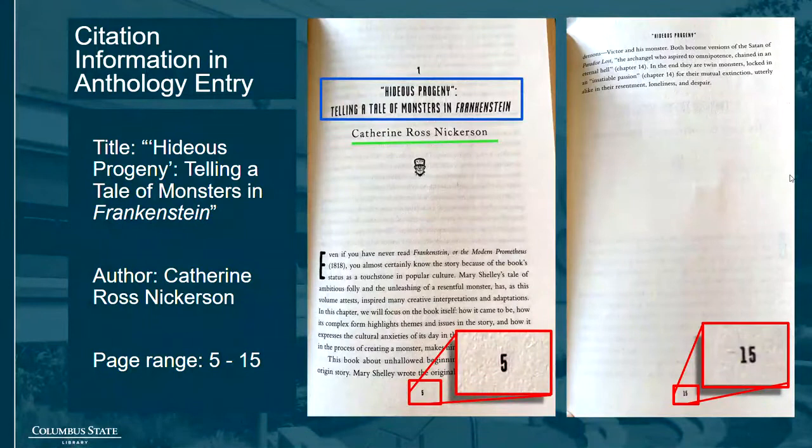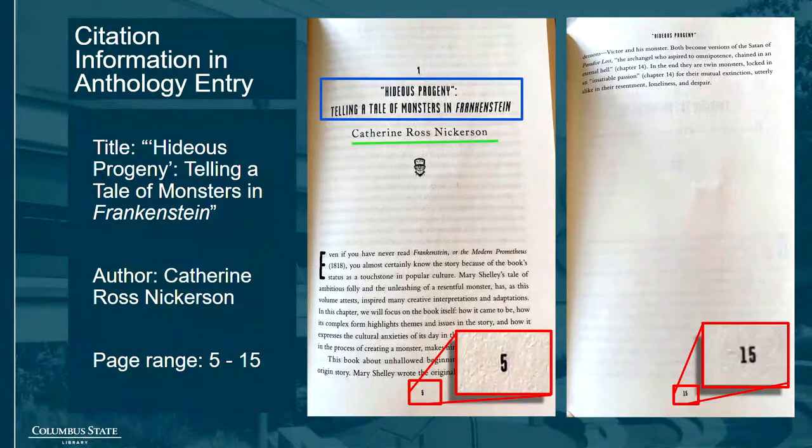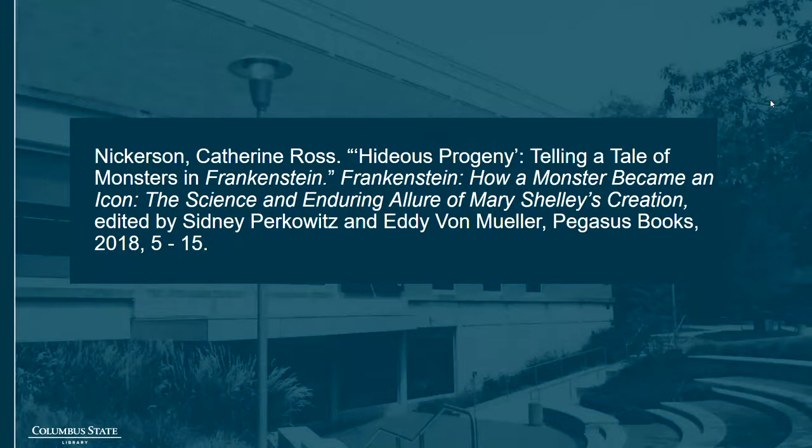Next, you need the title of the particular work you want to cite, as well as the author's name and the page range where the work appears. Turn to the work in question to find the title and the author's name and make a note of the first and last pages. Here we have Hideous Progeny: Telling a Tale of Monsters in Frankenstein by Katherine Ross Nickerson, and it starts on page 5 and ends on page 15. With all this information, we're able to put together the full citation, which looks like this.